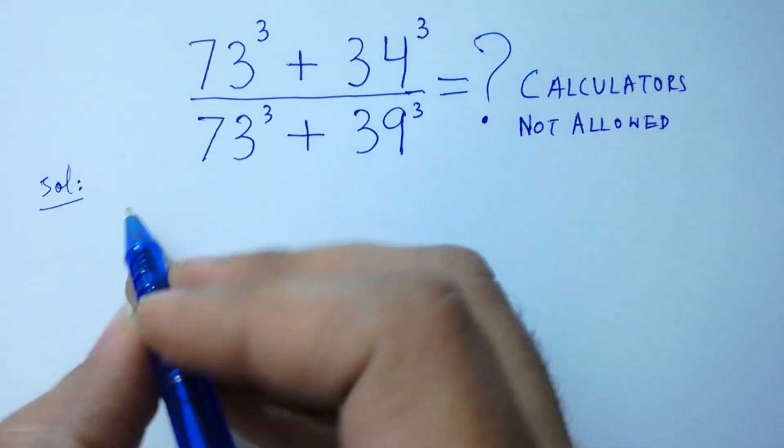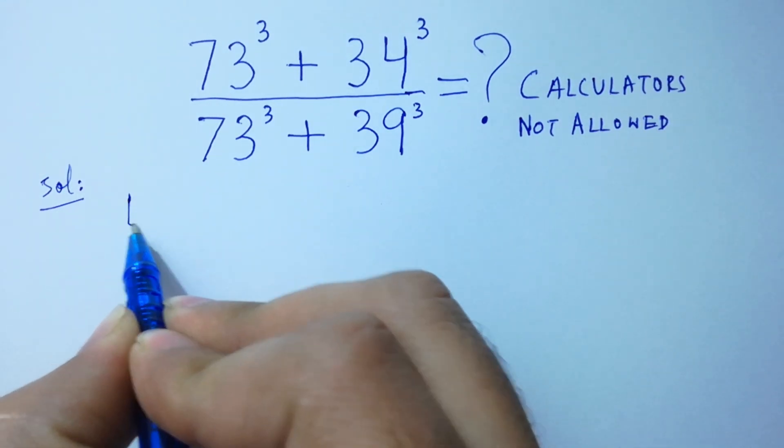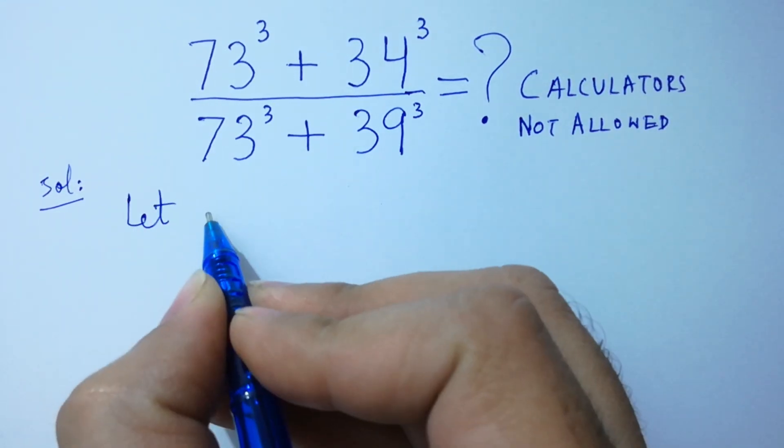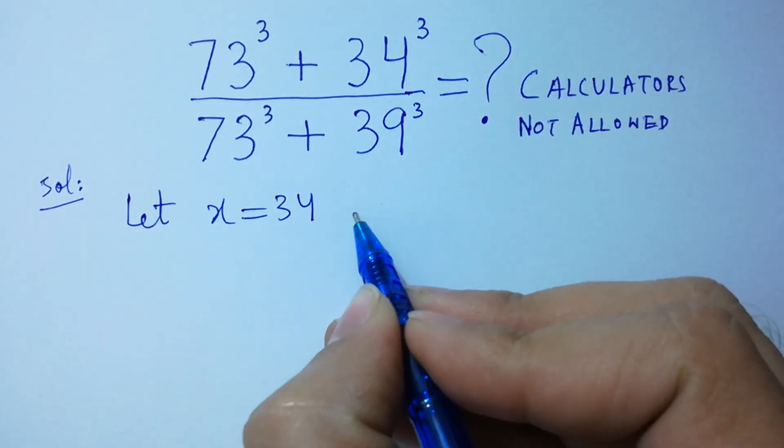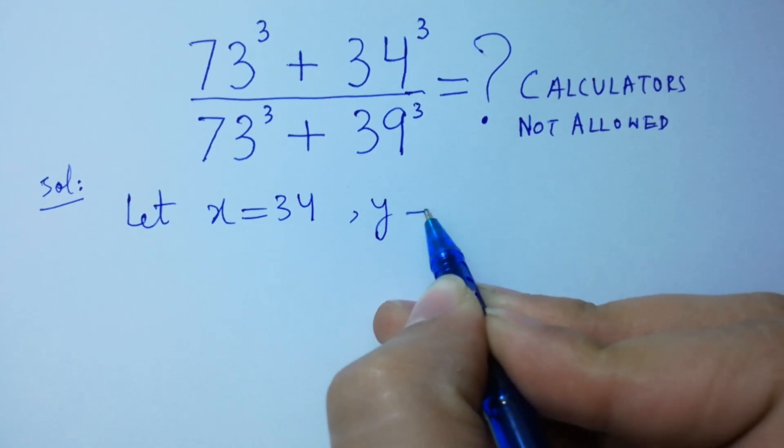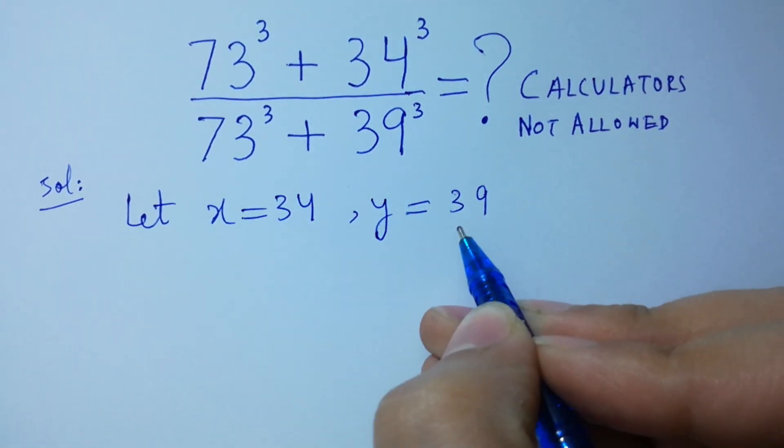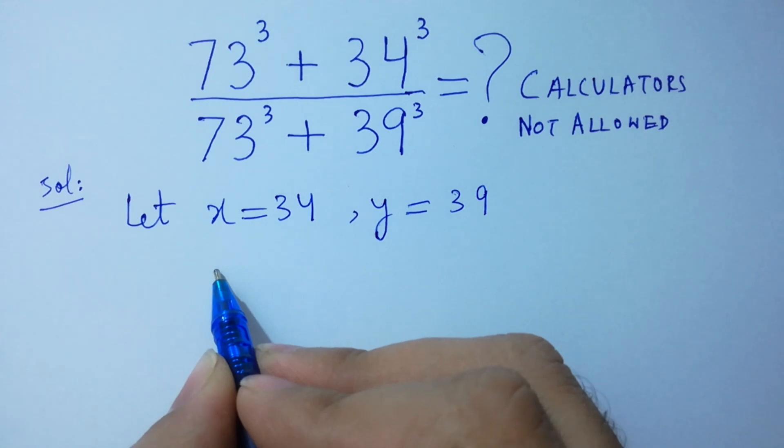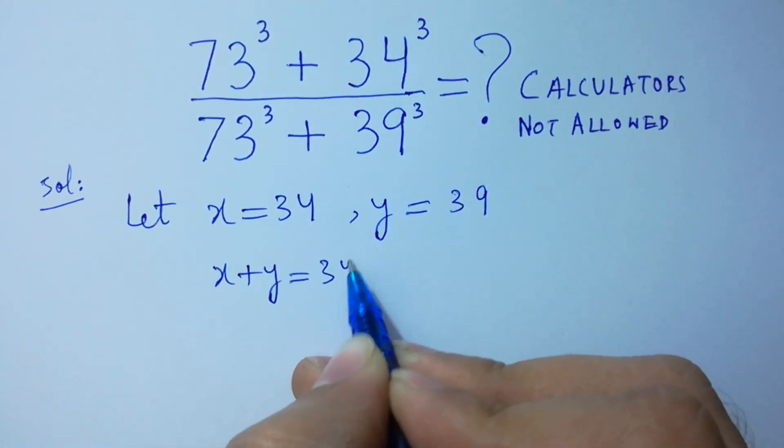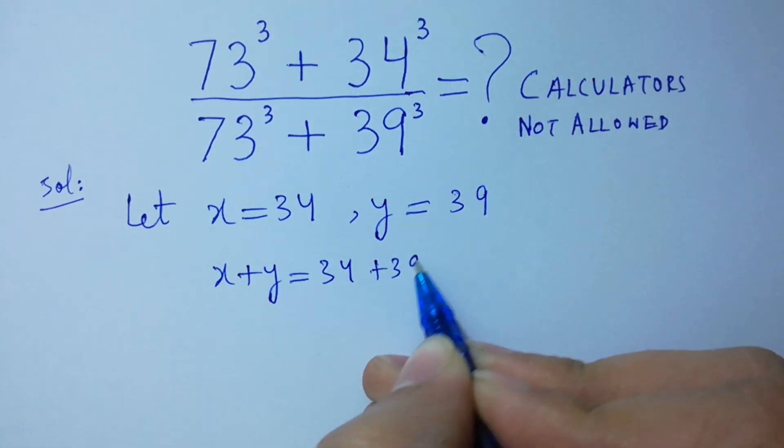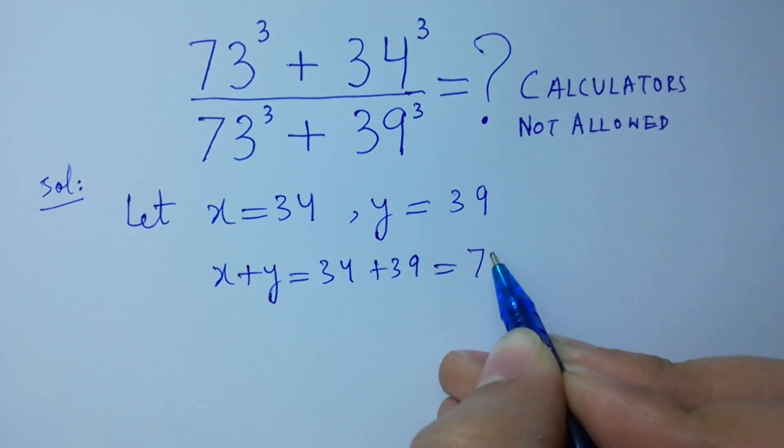To solve this, let x equal to 34, y equal to 39, then x plus y, 34 plus 39, will be equal to 73.